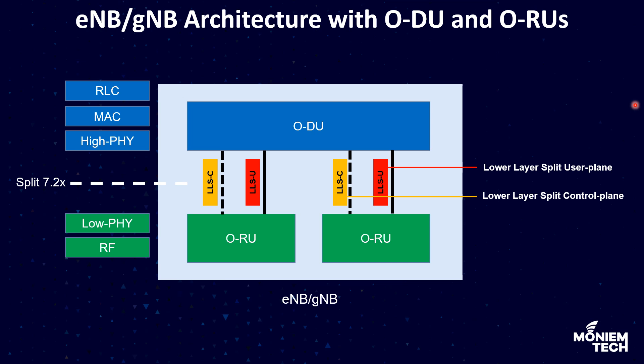We will discuss this later in the next slide. Low physical is the portion of physical processing on the ORU side of the fronthaul interface, including FFT, IFFT, digital beamforming, PRACH extraction, and filtering, and so on. That means we will have an interface called split 7.2x between ODU and ORU as per ORAN, and this is called the lower layer split, with both a user plane (U) and control plane (C).